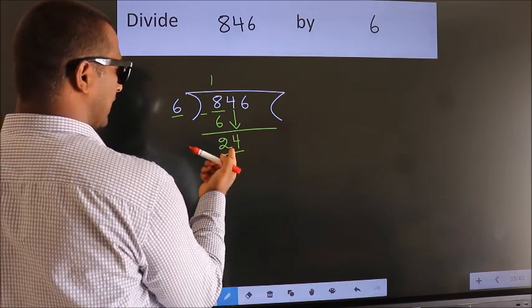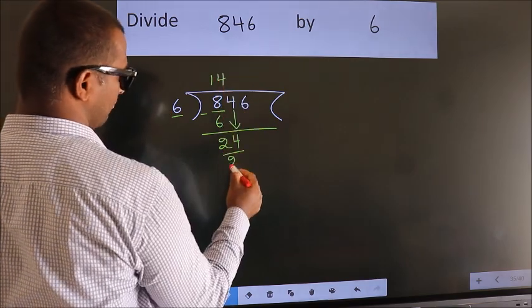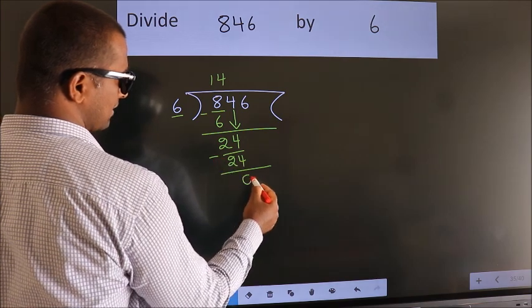When do we get 24? In 6 table. Now we subtract. We get 0.